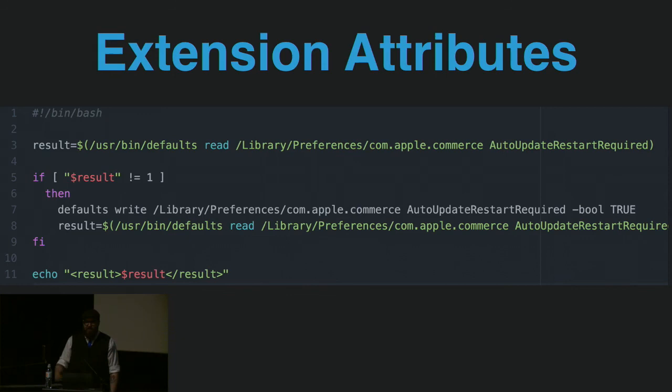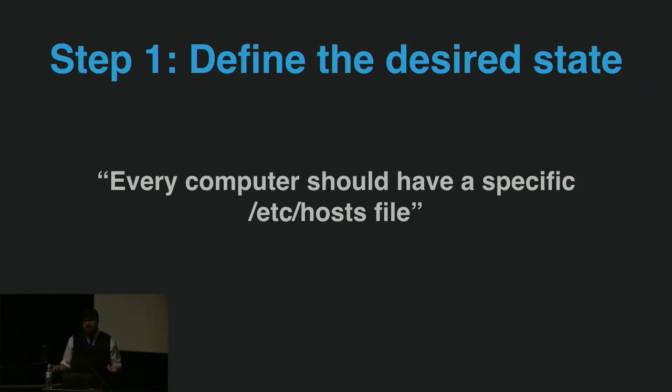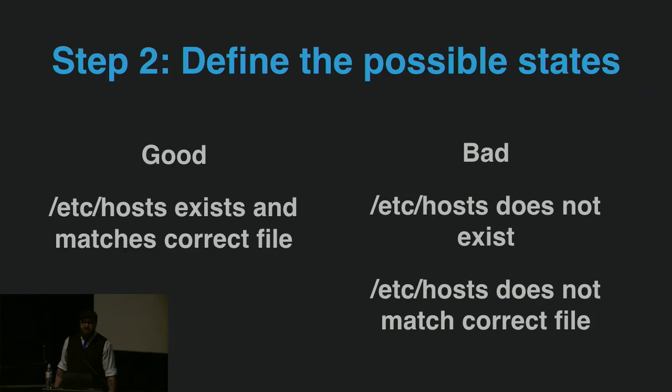Our final example is managing an entire file by comparing MD5 hashes. In this example we want to make sure that no one in your organization is updating their /etc/hosts file to override DNS settings you are providing — this is actually something I've had to do before. The possible states are: the hosts file is correct and matches, it doesn't exist (which is really bad), or it doesn't match what you want (not as bad, but still bad).